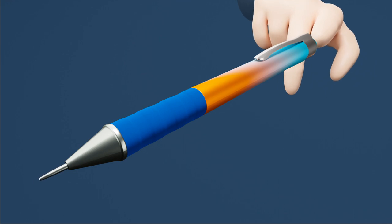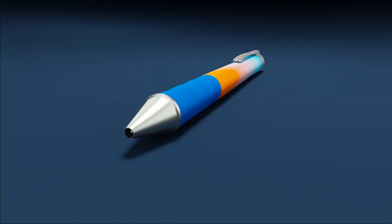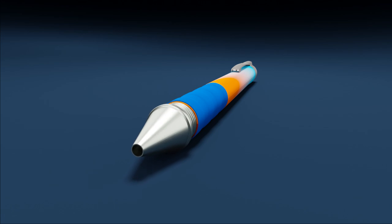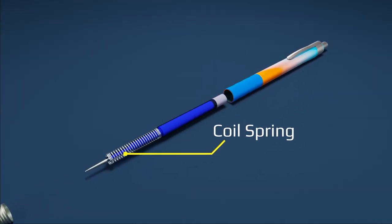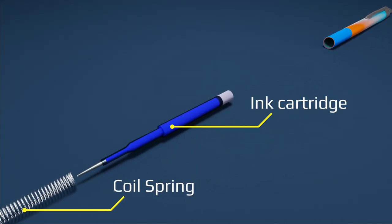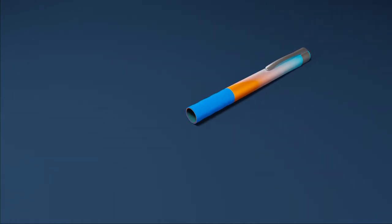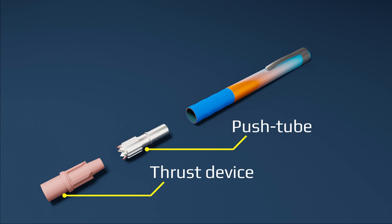So what's the secret here? After opening the nozzle, you will see a coil spring and an ink cartridge. Try harder, you'll probably discover two more pieces: the back button or push tube, and a thrust device.